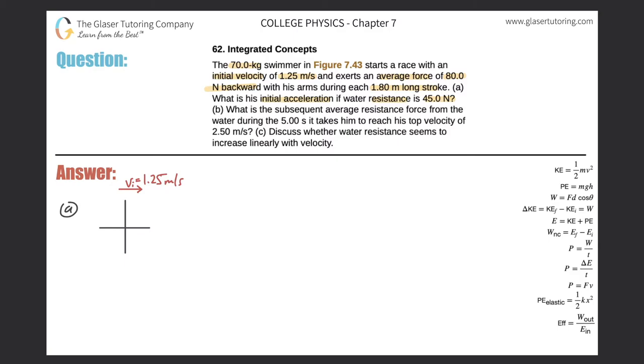He exerts an average force of 80 newtons backward with his arm, but the thing is that force he's exerting backward on the water. But guess what the water is doing on him? It's exerting the equal but opposite force, so therefore the vector here should be to the right. Remember Newton's third law, and also remember that we're concerned with forces acting on the swimmer, not by the swimmer.